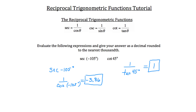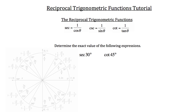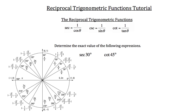Now I'll show you how to find the exact value of a reciprocal trigonometric function. Let's start with secant 30 degrees. To find exact values, we look at the unit circle. We're asked for secant of 30 degrees, and since secant is 1 over cosine theta, we draw our 30-degree angle in standard position on the unit circle.